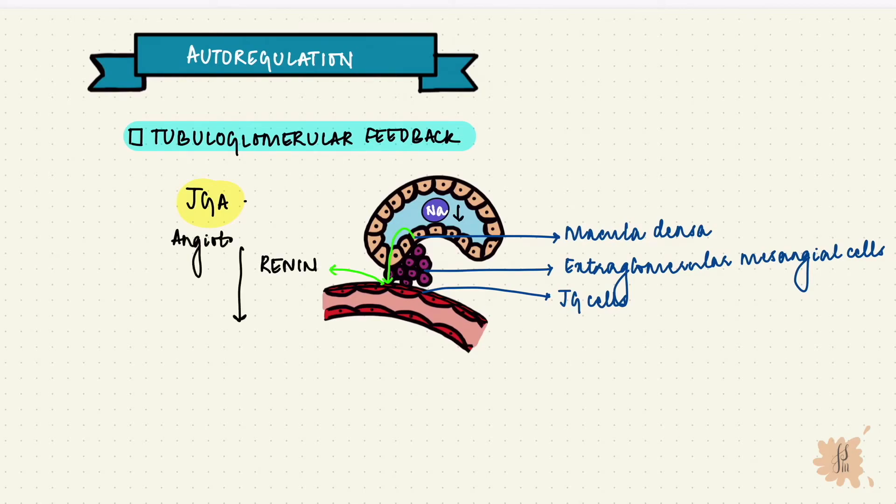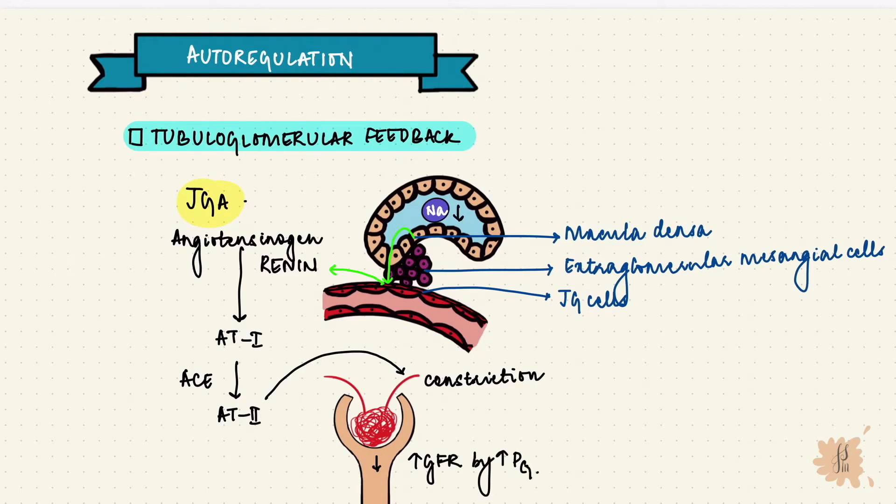Renin converts angiotensinogen to angiotensin 1, and by the angiotensin converting enzyme, angiotensin 2 is formed, which constricts the afferent arteriole and reduces the renal plasma flow, but increases the GFR by increasing the hydrostatic pressure in the glomerulus.